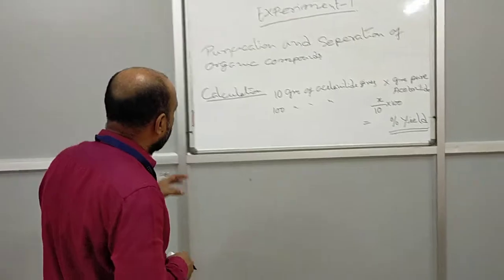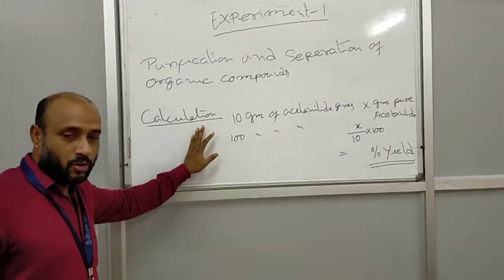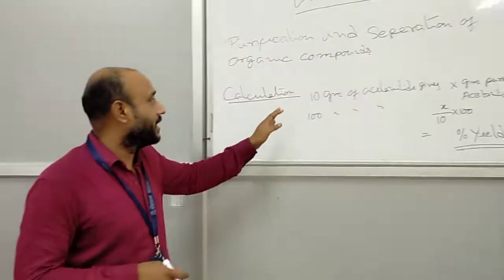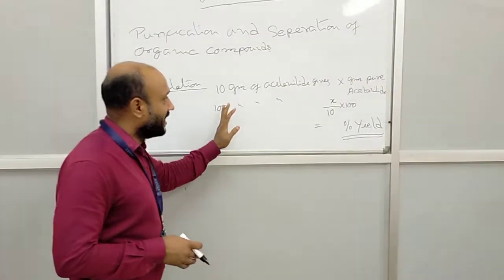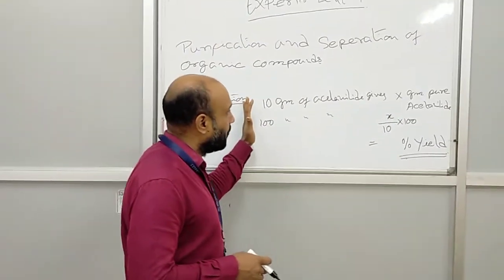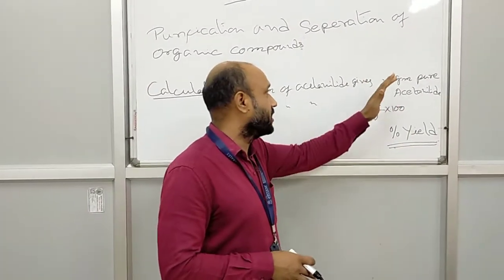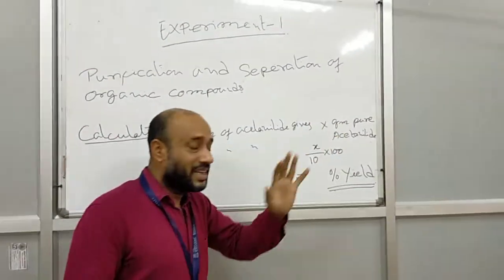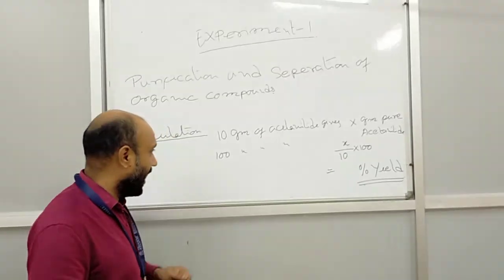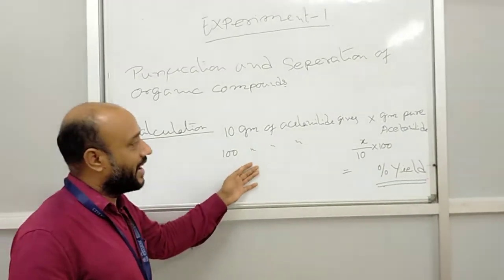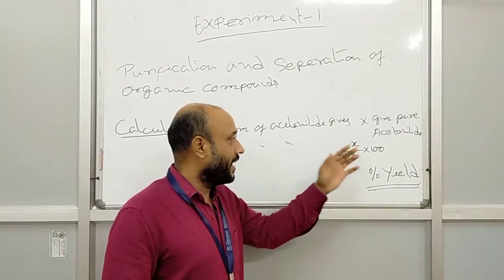Now you see the calculation. According to the procedure we have taken 10g of acetanilide. So 10g of acetanilide gives, for example after doing recrystallization, x grams of pure acetanilide. So 100g of acetanilide will give x by 10 into 100. That will be the percentage yield of actual pure acetanilide compound.